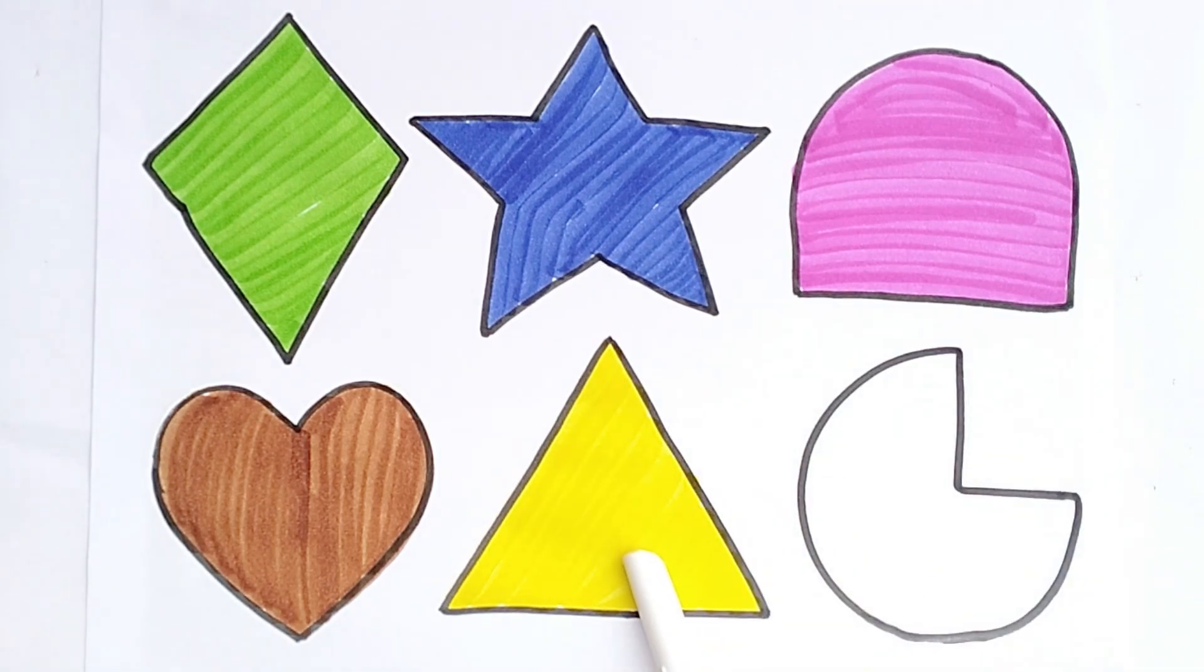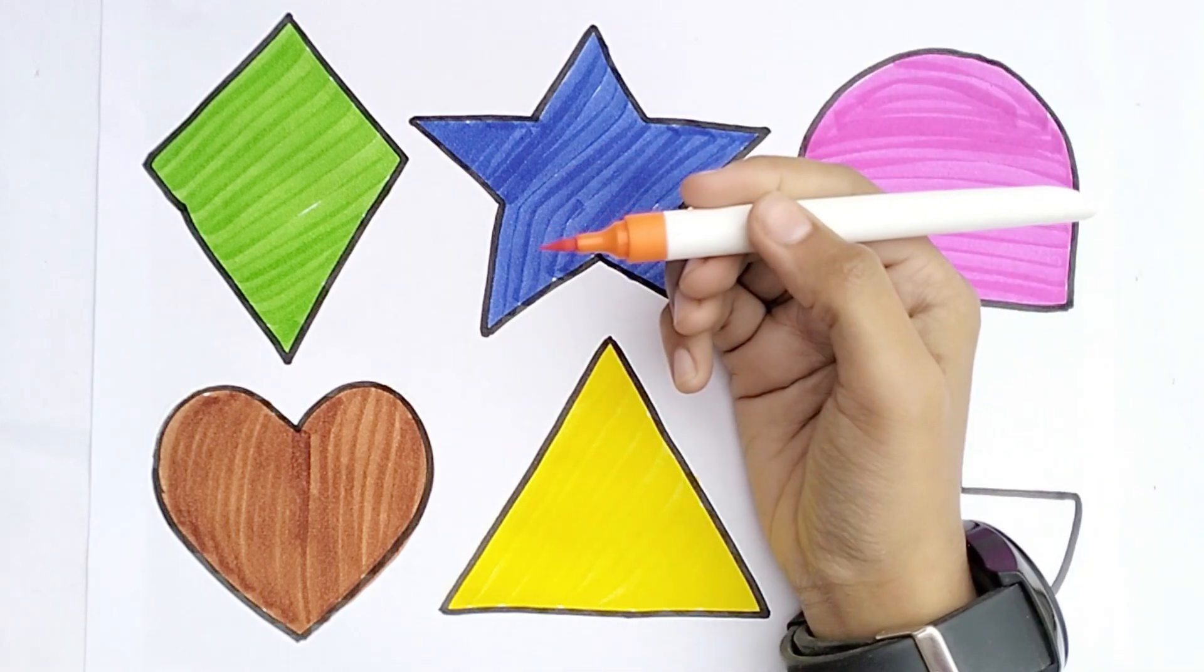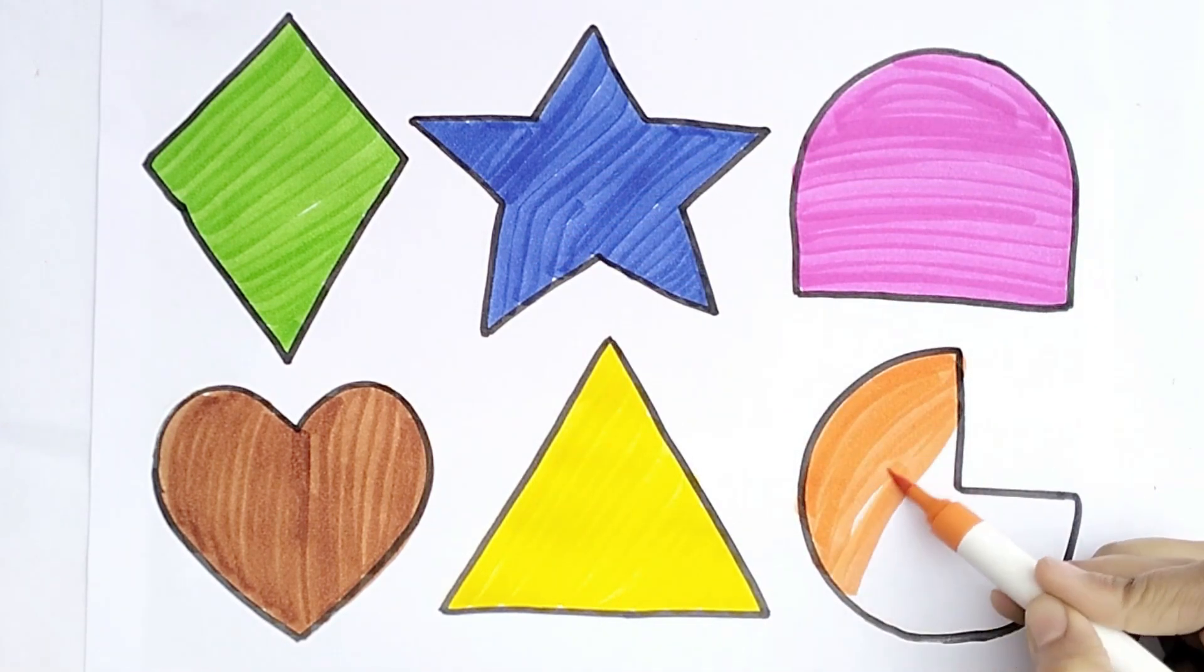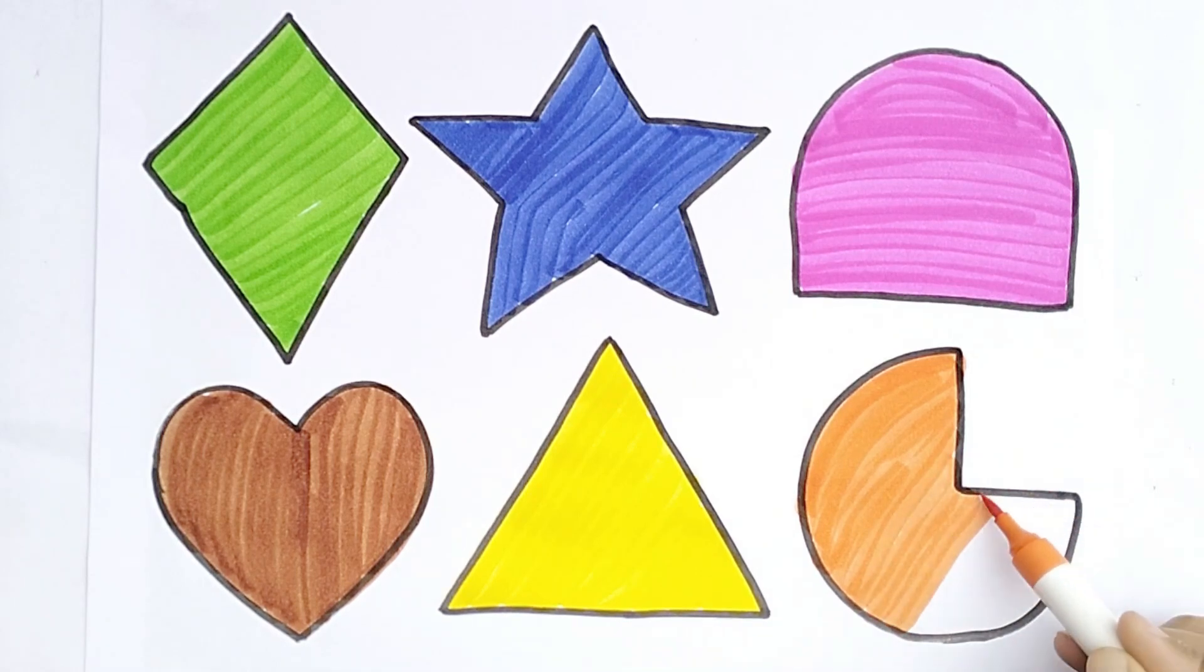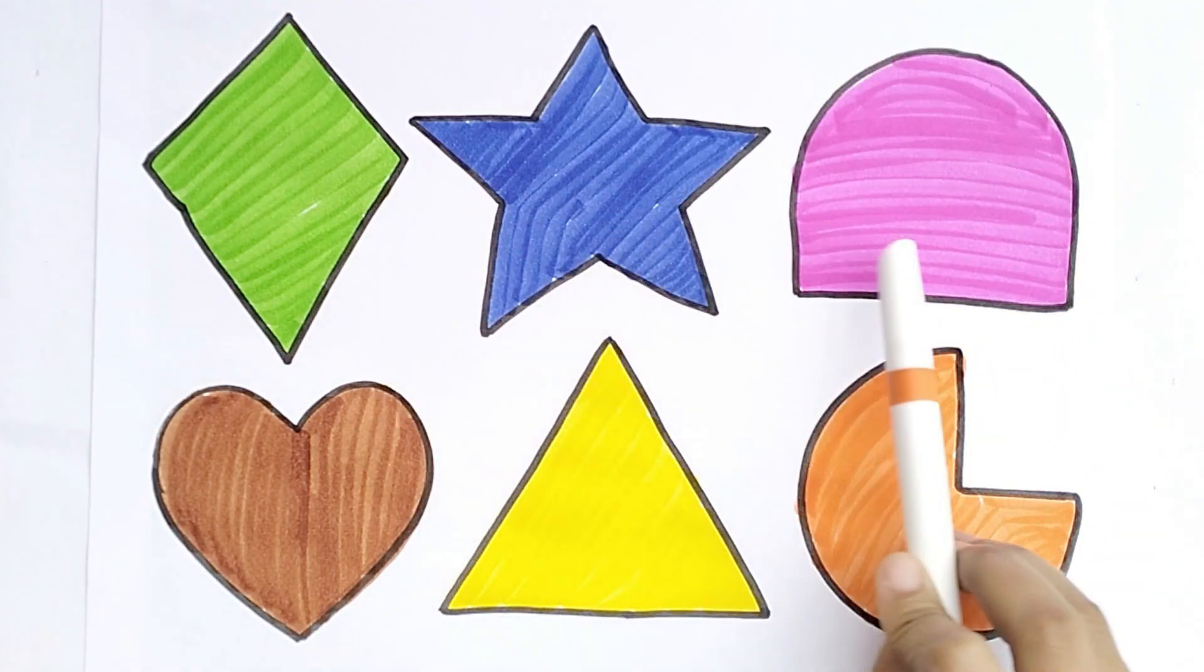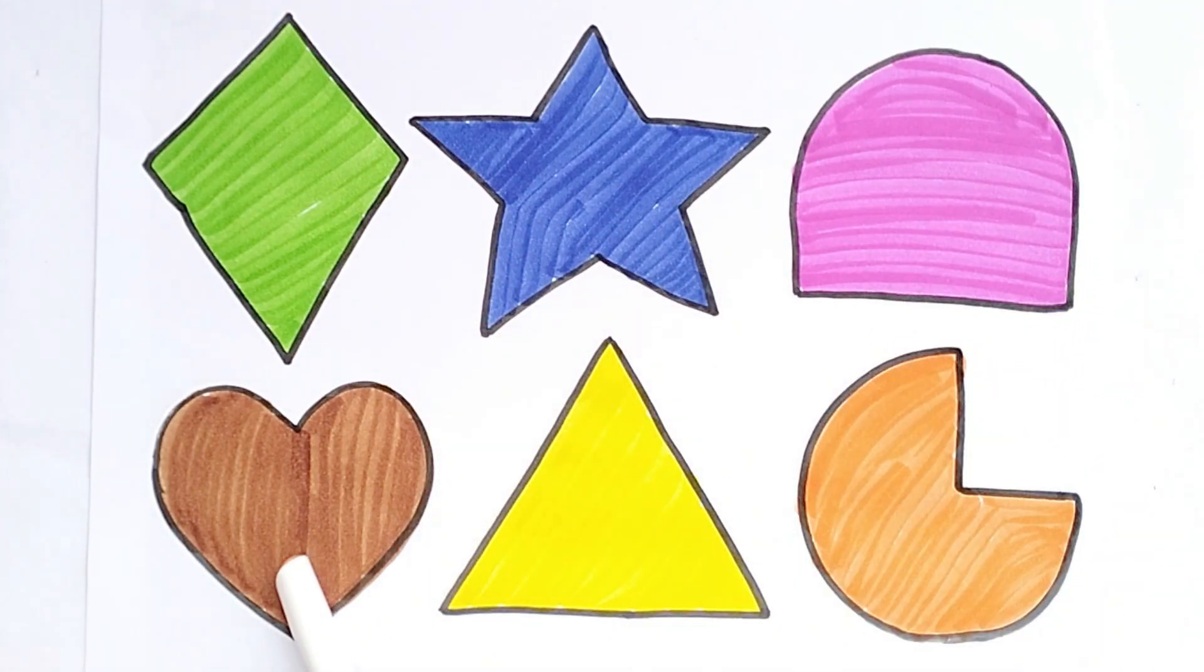Triangle, orange color. Pie. Kite, star, semi circle, heart, triangle, pie.